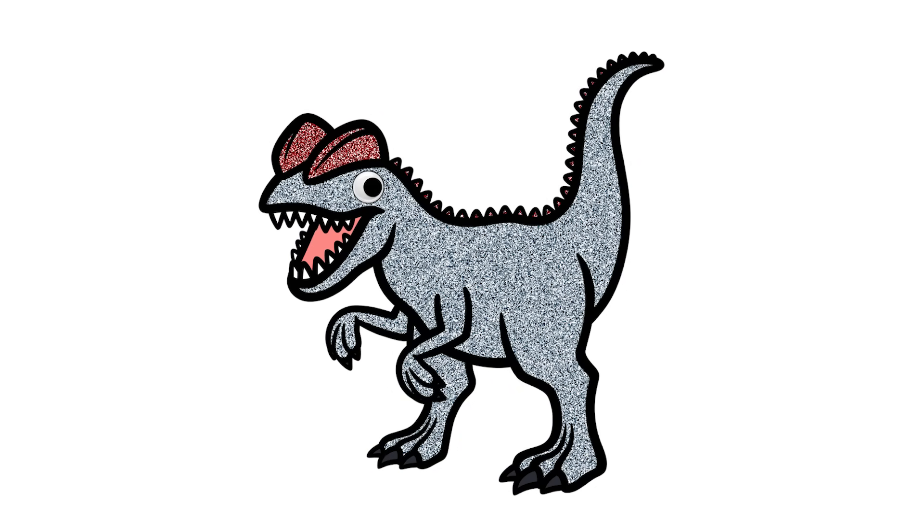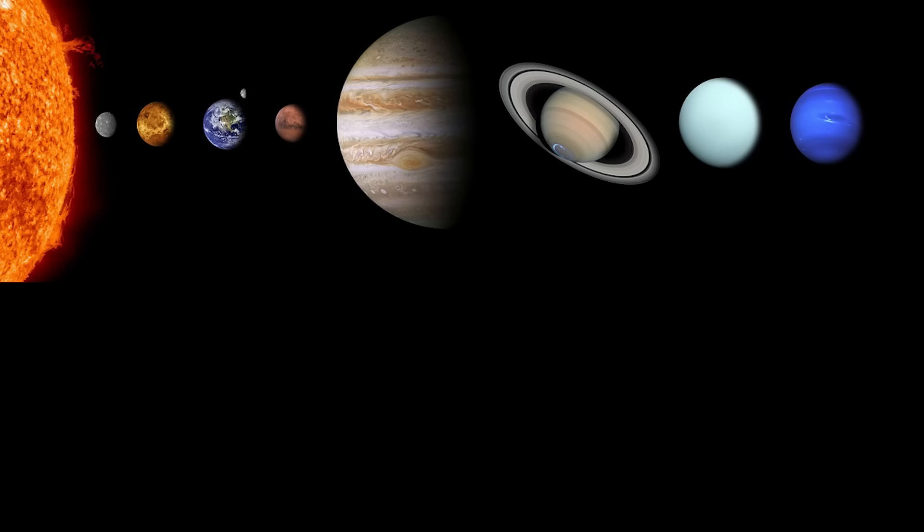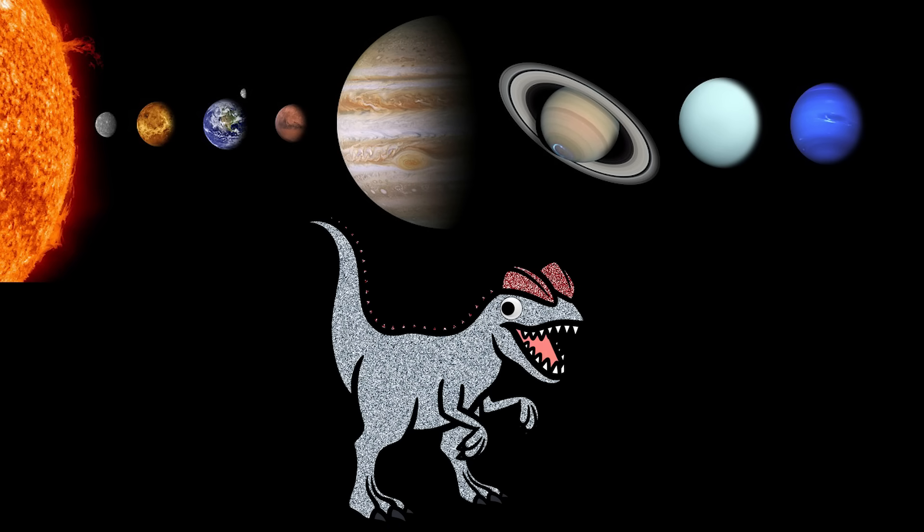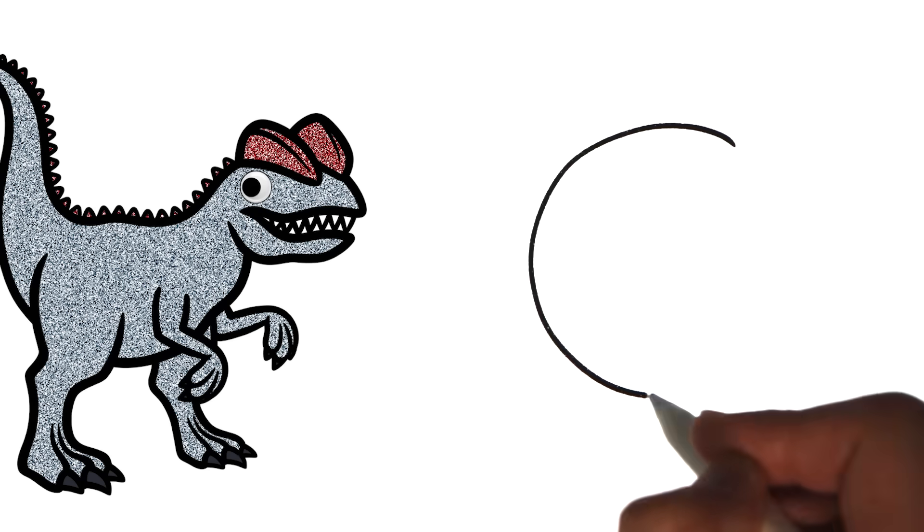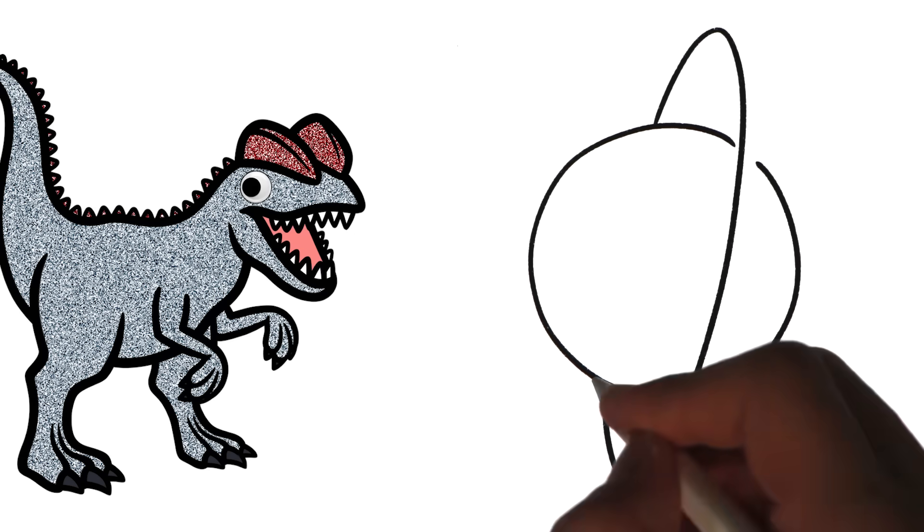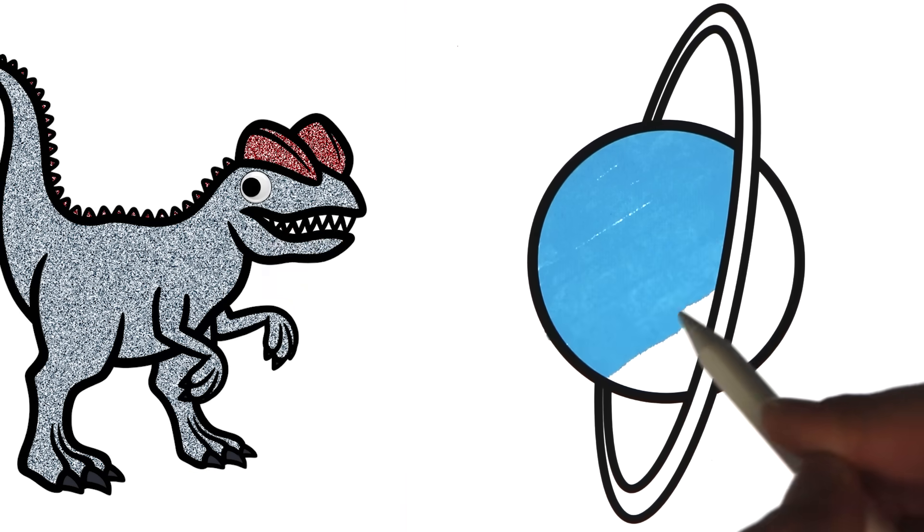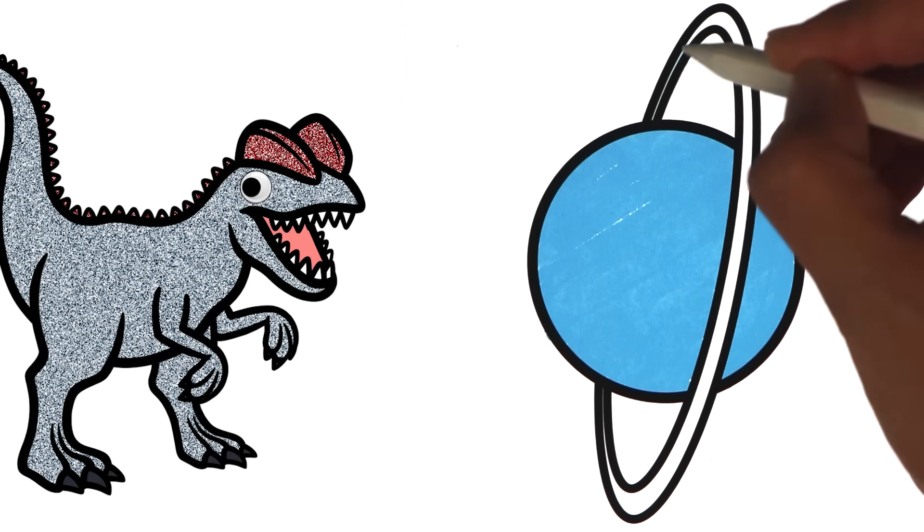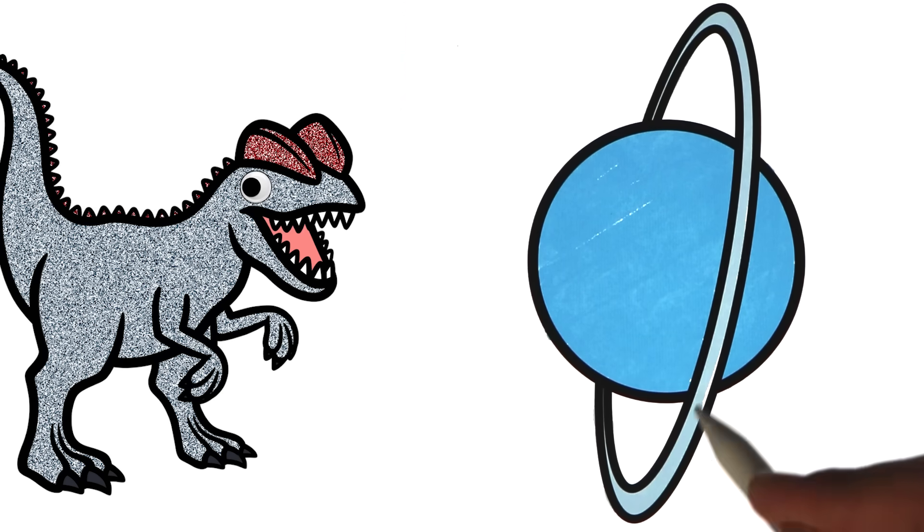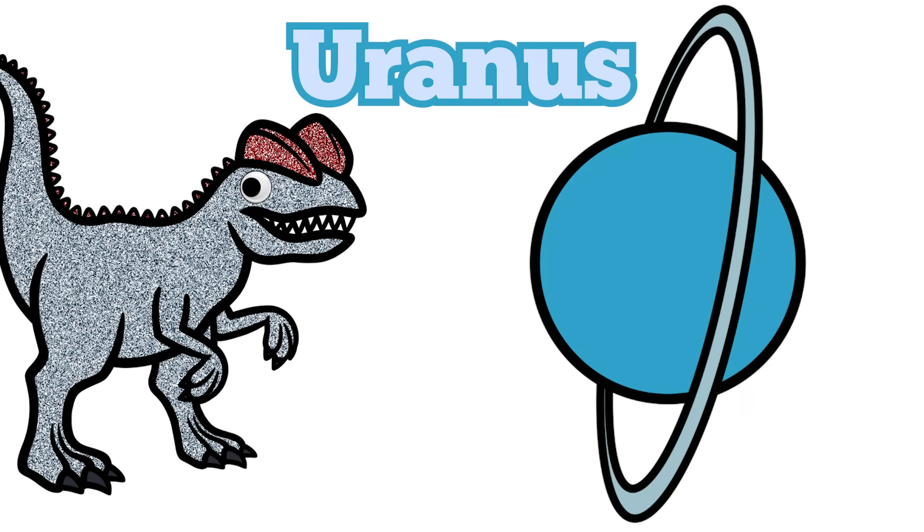Hello, my name is Dilophosaurus. Hello, Dilophosaurus. What's it like on Uranus? Uranus is the seventh planet from the sun. And it is surrounded by a set of 13 rings. And just like Venus, it spins the opposite directions as Earth and most other planets. Thank you, Dilophosaurus. Bye! Bye, everyone!